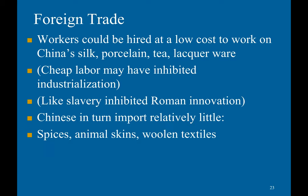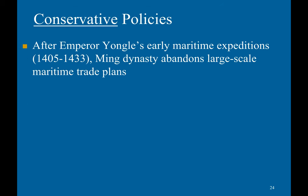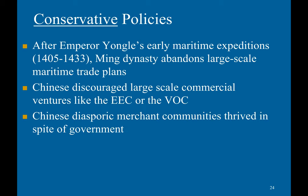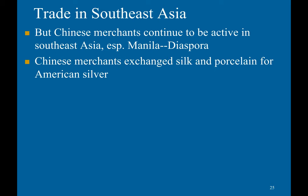China imported relatively little — mainly spices, animal skins, wool, and textiles. The West paid for Chinese imports with silver bullion from the Americas. After Emperor Yongle's early maritime expeditions, the Ming Dynasty abandoned large-scale maritime trade plans. China discouraged large-scale commercial ventures like the English East India Company or Dutch East India Company. However, Chinese diasporic merchant communities thrived despite the government. Chinese merchants remained active in Southeast Asia, especially within Manila, exchanging silk and porcelain for American silver, with extensive dealings with the Dutch East India Company.